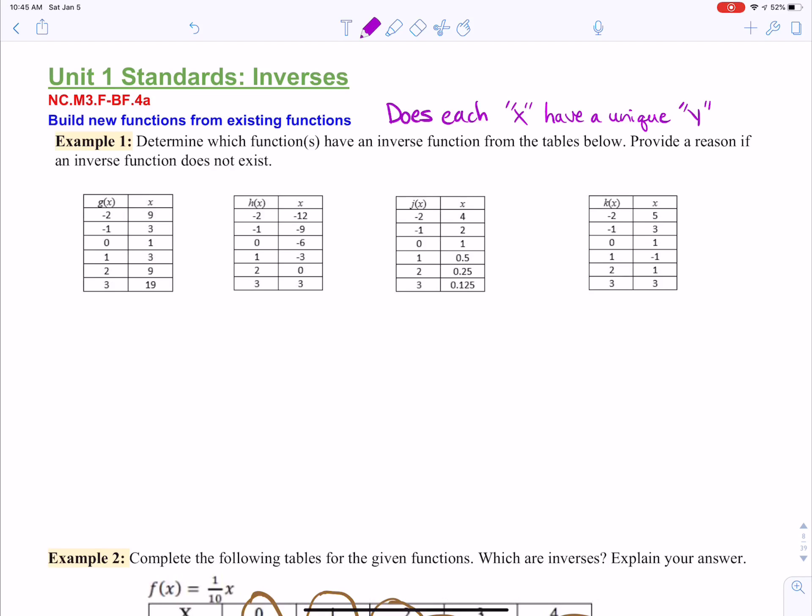So for this first one, g of x, if we say negative two goes with nine, it can't go with another number in the list, or that would not be okay. But that's the original function, and they are asking us about the inverse function. So first things first, we need to switch the x and the y.